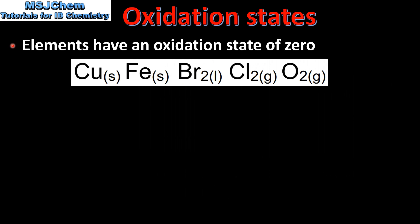Next we look at elements. Elements have an oxidation state of 0. Some examples are copper and iron, which are both in the solid state as elements. We also have diatomic molecules such as bromine, chlorine, and oxygen — they are all elements, therefore they have an oxidation state of 0.